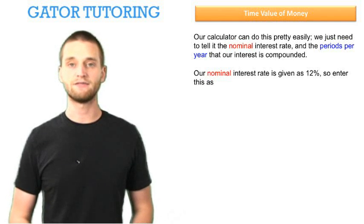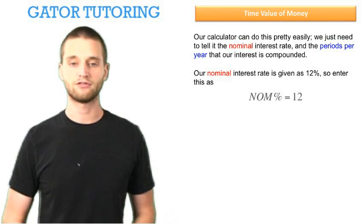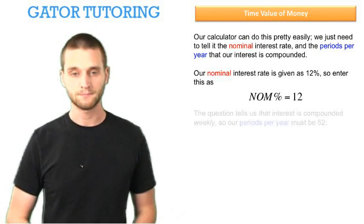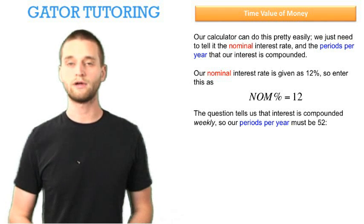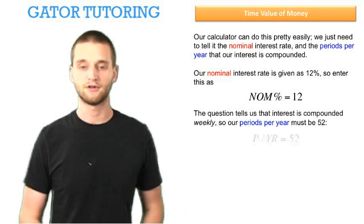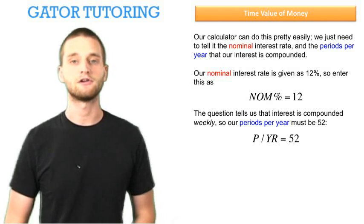Our nominal interest rate is given as 12%, so enter this as the nominal percentage. The question tells us that the interest is compounded weekly, so our periods per year must be 52, so we enter that under periods per year.